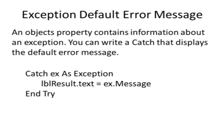You may have noticed the spot where it said catch ex as exception. An object's property contains information about an exception, and you can write a catch that displays a default error message for that exception. You can change the catch blocks to say catch ex as exception, and inside the catch block put lblresult.txt equals ex.message.